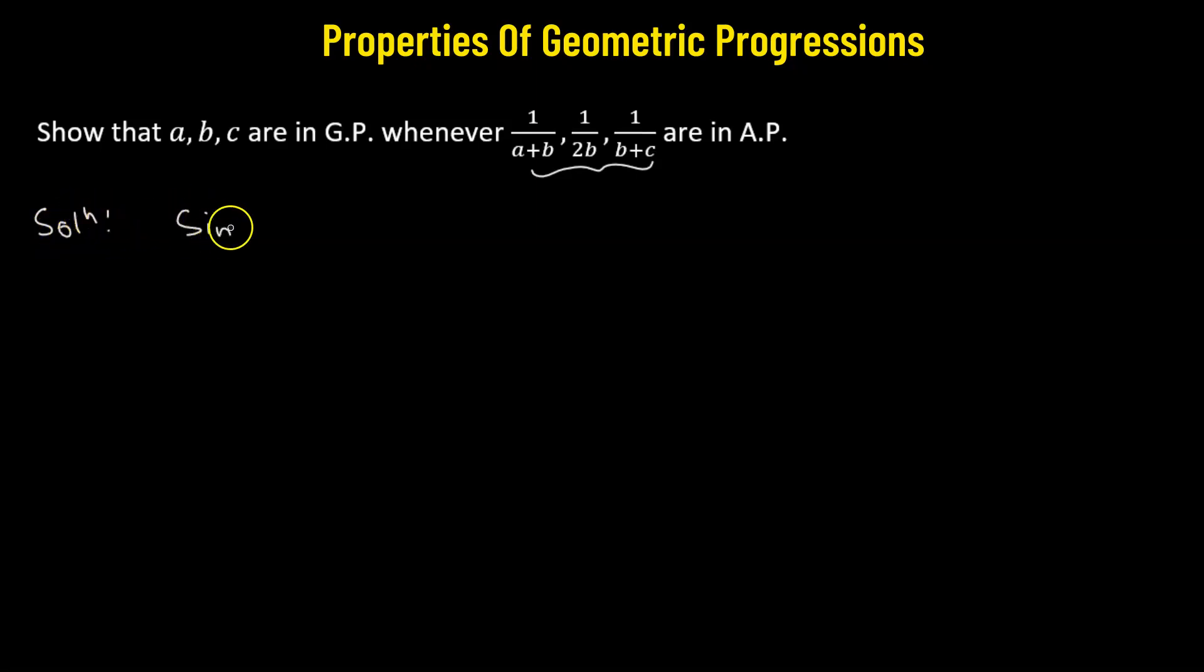Since we have these numbers, these three terms, 1 over a plus b, followed by 1 over 2b, and 1 over b plus c, these three are in arithmetic progression.